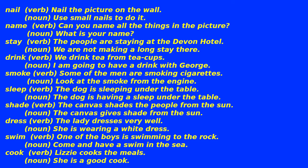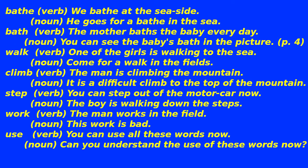Dress — verb: 'The lady dresses very well'; noun: 'She is wearing a white dress.' Swim — verb: 'One of the boys is swimming to the rock'; noun: 'Come and have a swim in the sea.' Cook — verb: 'Lizzie cooks the meals'; noun: 'She is a good cook.' Bathe — verb: 'We bathe at the seaside'; noun: 'He goes for a bathe in the sea.' Bath — verb: 'The mother baths the baby every day'; noun: 'You can see the baby's bath in the picture.' Walk — verb: 'One of the girls is walking to the sea'; noun: 'Come for a walk in the fields.' Climb — verb: 'The man is climbing the mountain'; noun: 'It is a difficult climb to the top.' Step — verb: 'You can step out of the motor car now'; noun: 'The boy is walking down the steps.' Work — verb: 'The man works in the field'; noun: 'This work is bad.' Use — verb: 'You can use all these words now'; noun: 'Can you understand the use of these words now?'